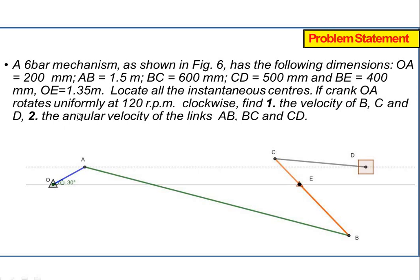The crank OA rotates uniformly at 120 RPM in a clockwise direction. Find the velocity of points B, C, and D, and the angular velocity of links AB, BC, and CD.